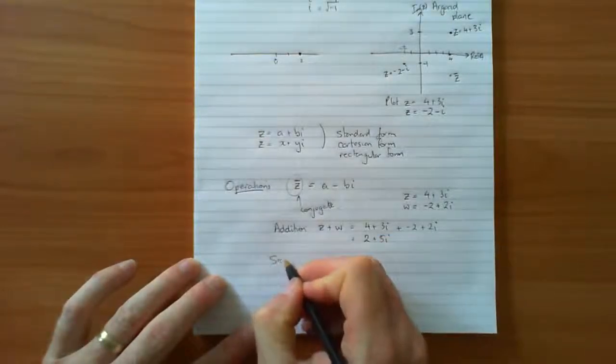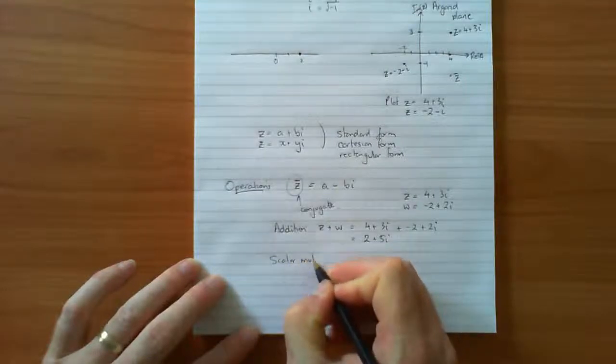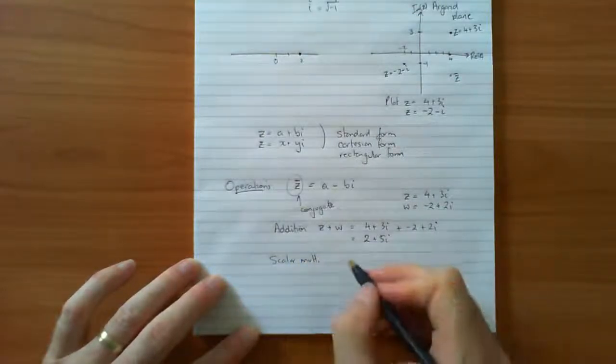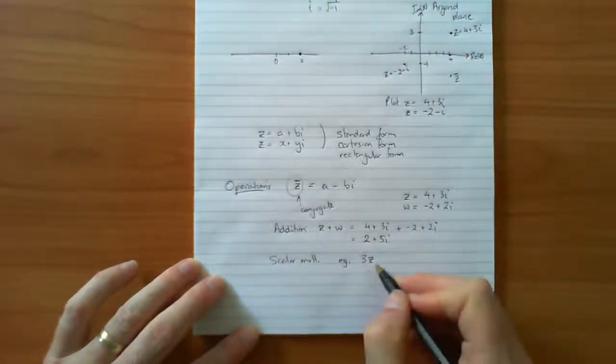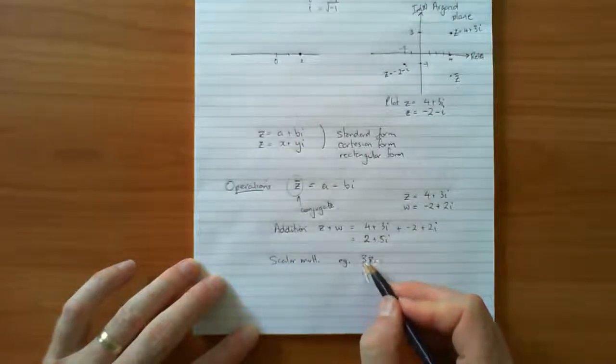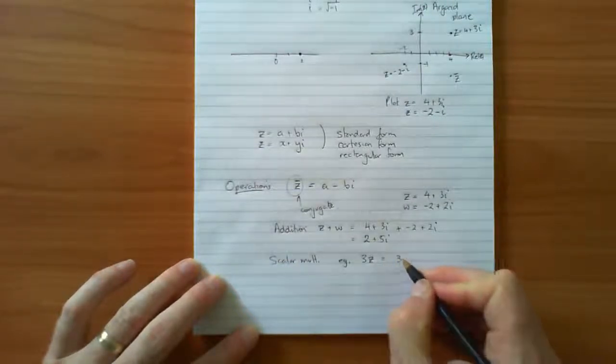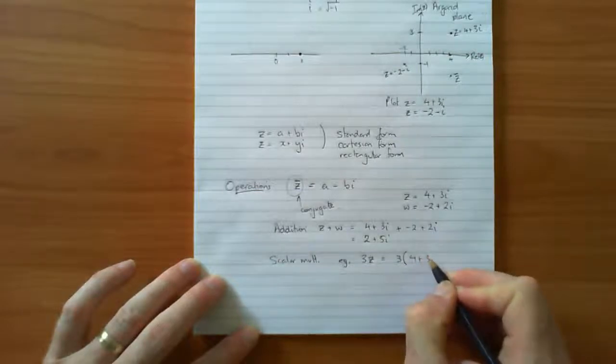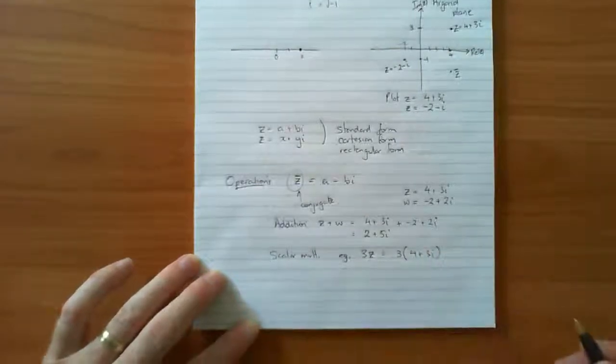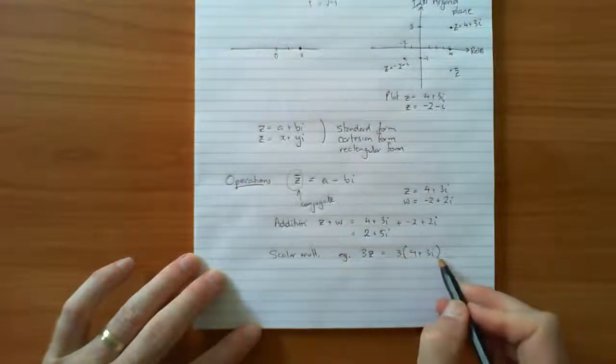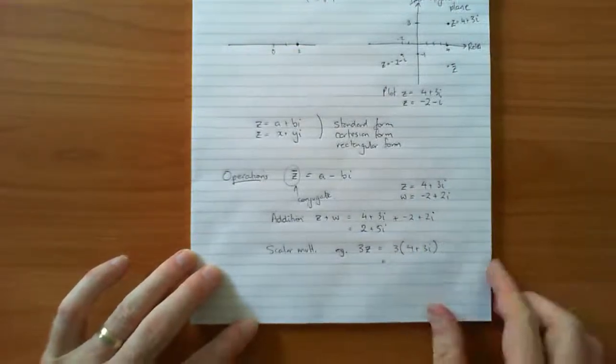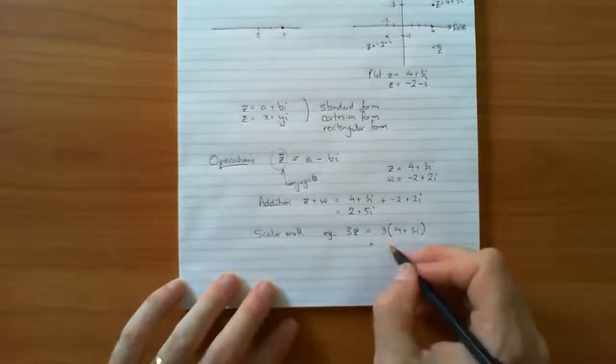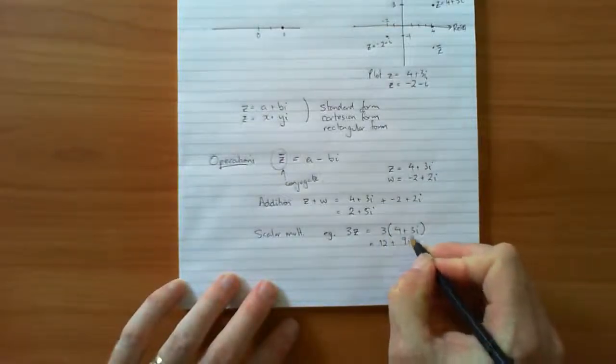Next one we'll look at is scalar multiplication. So as an example let's consider 3z, 3 times z. 3 is the scalar, it's multiplying the complex number z. So that's really 3 times 4 plus 3i. The scalar multiplying the complex number equals, and in this case it's just like the distributive law in algebra. 3 times 4 is 12, plus 3 times 3 is 9i.